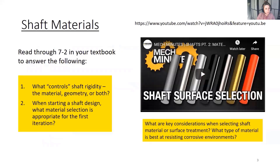Shaft materials are covered in chapter 7-2 in your textbook. Read through that section, paying attention to two questions: What controls shaft rigidity — the material, geometry, or both? And when starting a shaft design, what material is appropriate for the first iteration? In the next video, we'll talk about shaft surface selection. Pay attention to key considerations in selecting shaft material or surface treatment, and what type of material is best at resisting corrosive environments.